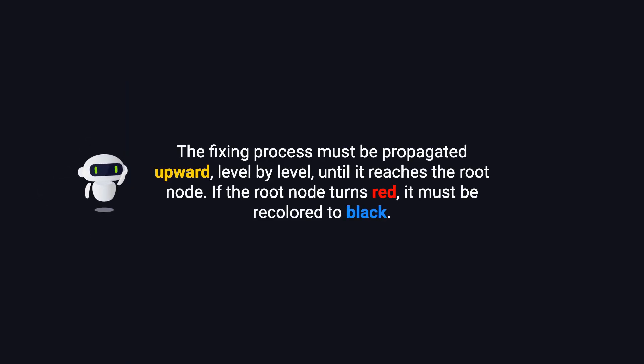One important thing to note is that fixing one violation can sometimes introduce a new violation at a higher level in the tree. This is why we may need to move upward and make adjustments at multiple levels until the entire tree is balanced again. If we reach the root and find that it has become red, we simply recolor it to black to finish the adjustment process.